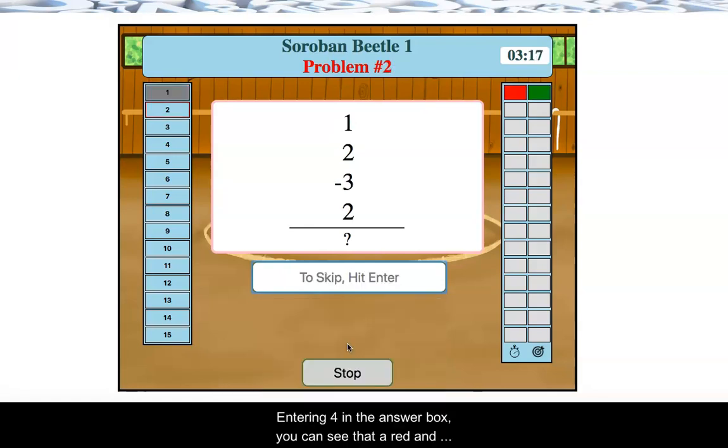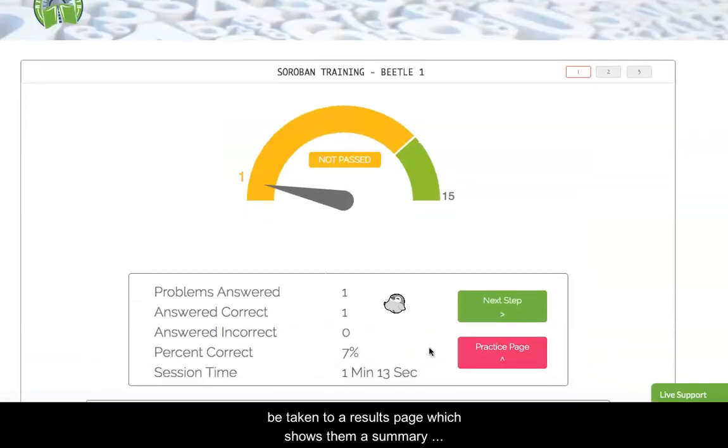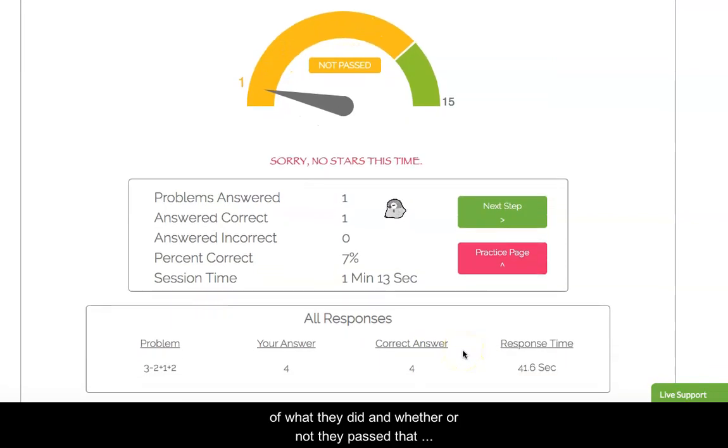Entering 4, you can see that a red and green box appears in the upper right. Now the red box tells me I was a little bit slow in solving my problem, but the green box tells me that I entered the correct answer. So we're going to measure both students' accuracy and the speed at which they solve their problems.